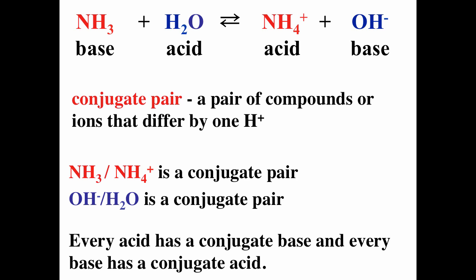In the reaction of ammonia plus water going to ammonium ion plus hydroxide, ammonia is the base and water is the acid. Once the water loses the hydronium ion, it forms the hydroxide — we call the water and hydroxide a conjugate acid-base pair. Once the ammonia gains the hydronium ion, it forms the ammonium ion, so we call ammonia and the ammonium ion a conjugate acid-base pair. Every acid has a conjugate base; every base has a conjugate acid.